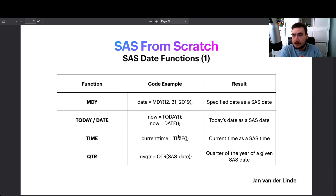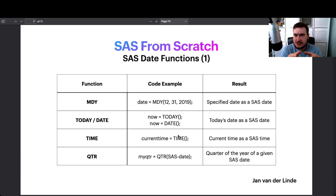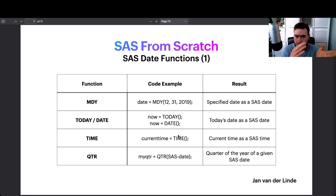TODAY and DATE functions are also useful if we want to write logs or other outputs that require a date and time attached. You can use TODAY or DATE to get just the date, TIME to get just the clock time, and DATETIME() to get both the date and the time.